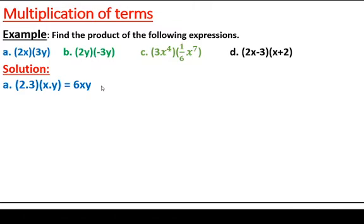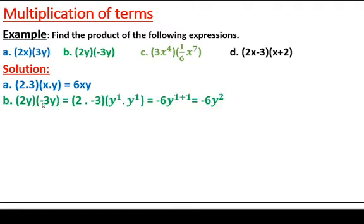In the next example we have like terms. When we multiply terms they can be like or unlike — we can still multiply them. In the second example we have 2y times minus 3y. Multiply the coefficients: 2 times minus 3 is minus 6. Then y times y equals y squared, because y to the power of 1 times y to the power of 1 equals y to the power of 1 plus 1, which is y squared. So the product is minus 6y squared.